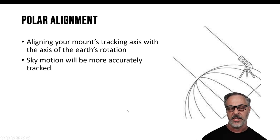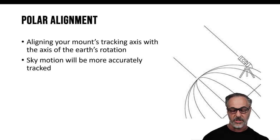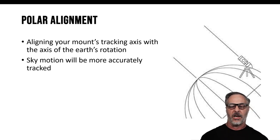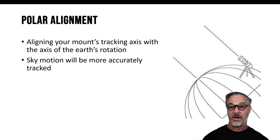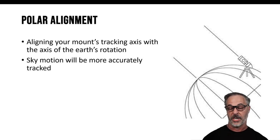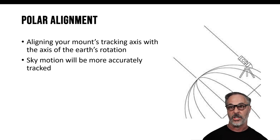We started out talking about those three things: polar alignment, pointing model, and tracking accuracy. Polar alignment is essentially aligning your mount's tracking axis with the axis of the Earth's rotation — you want to get that as accurately as you possibly can. Good polar alignment is always important, and the better your polar alignment, the better everything else is going to work. It's the foundation. If you do good polar alignment, your sky motion will be more accurately tracked, you'll have less target drift, and less fighting with your guiding software.